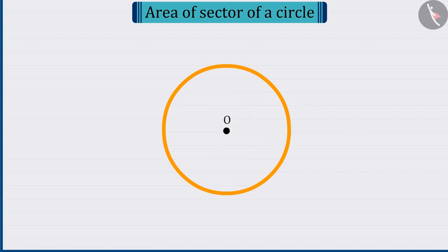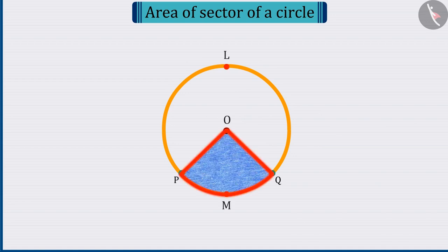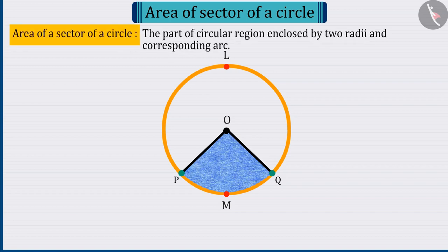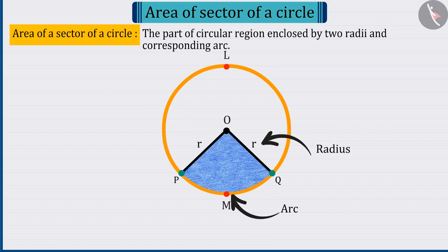Let's move the discussion forward. What do you understand by the shaded part of this circle? Well done! We had studied in the previous class that the part of the circle surrounded by two radii and corresponding arcs is called the sector of that circle.